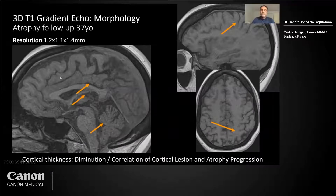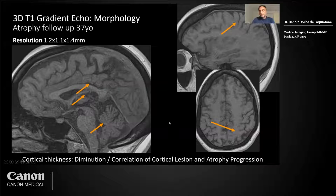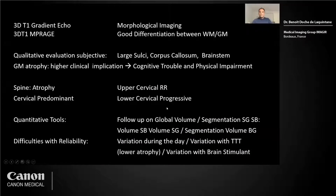For other morphological sequences, I use the 3D T1 gradient echo. Here is a 37-year-old man — resolution is nearly isotropic — you see a smaller corpus callosum, a smaller cerebellum, and large sulci. Cortical thickness can also be studied with atrophy progression. The cortical lesion correlates with atrophy progression. The problem with follow-up of atrophy is that it's first a qualitative, subjective evaluation looking at sulci, corpus callosum, breast and this volume, and gray matter atrophy has a higher clinical implication for cognitive trouble and physical impairment.